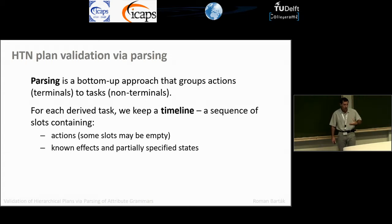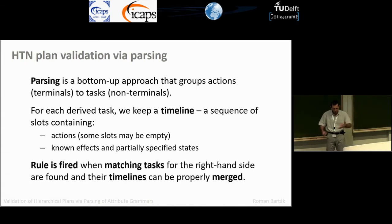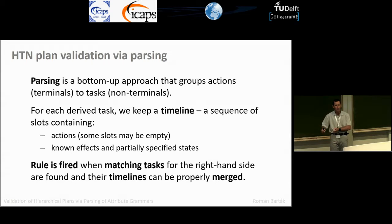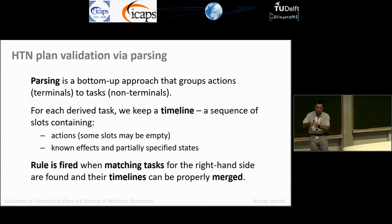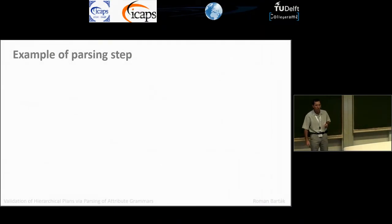Slots contain actions from the original plan, along with descriptions of the state right before the action and the action's effects, which is useful for checking causal constraints. Slots might be empty if we don't yet know the action because we'll need to interleave something from another branch. The idea is we have the rules, a set of actions from the initial plan, and we try to group them: find a rule whose right-hand side matches some subset of activities, and if all constraints are satisfied, group them into a corresponding task.